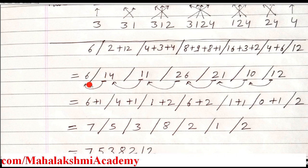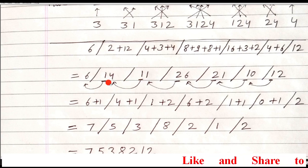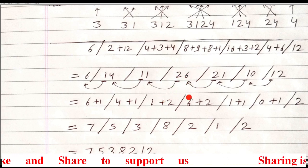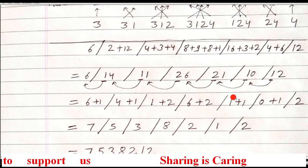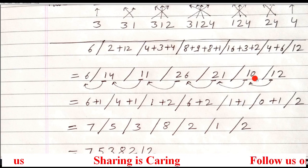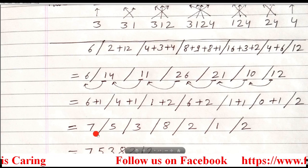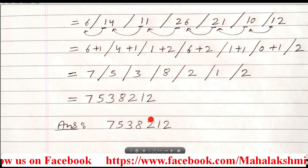Add the products section by section. This 6 is written as it is; along with 1 from the carry: 6 plus 1. Then 4 plus 1. Then 1, then with 2 coming: 6 plus 2. Then 1 plus 1. Then 0 plus 1. After adding, only 1 digit in each section, so shift accordingly. Remove all slashes to get the final answer. Thank you.